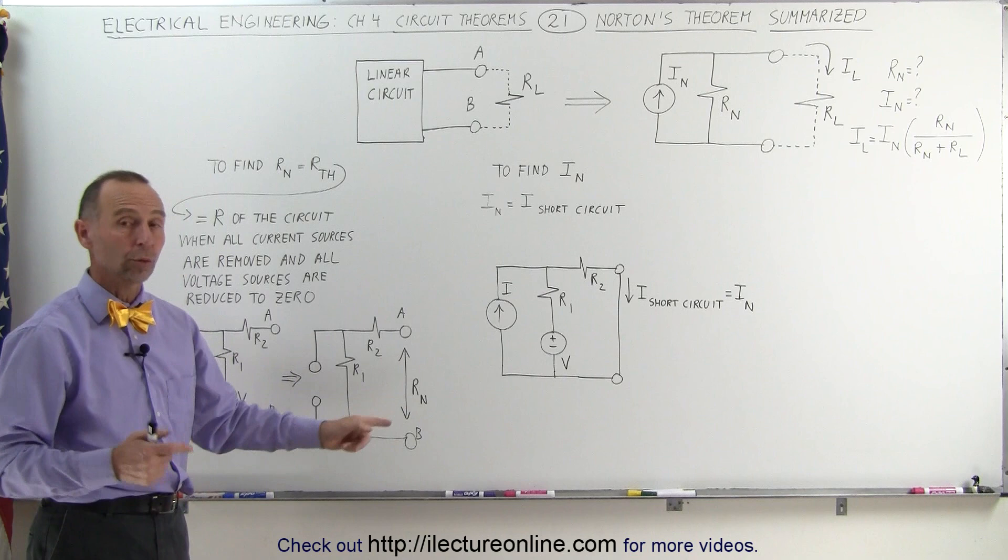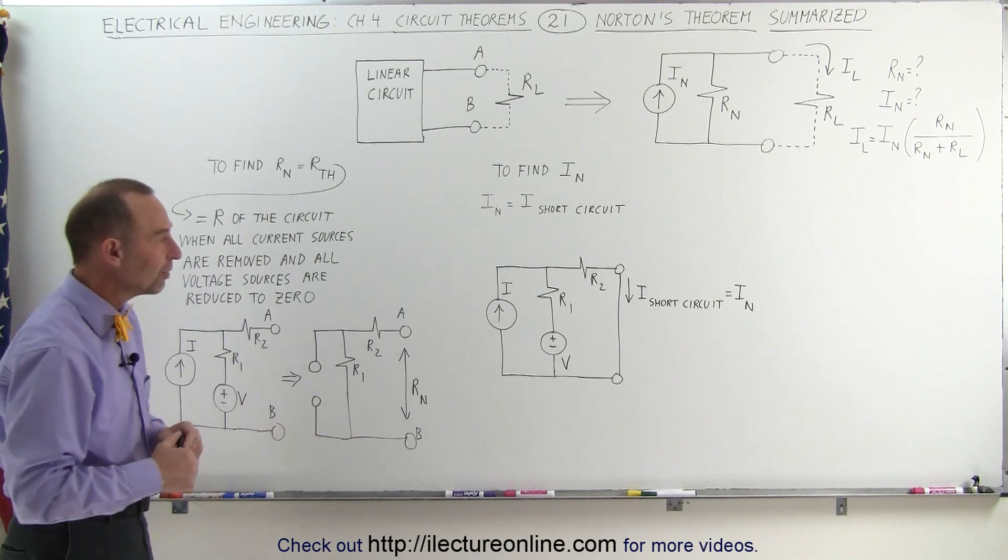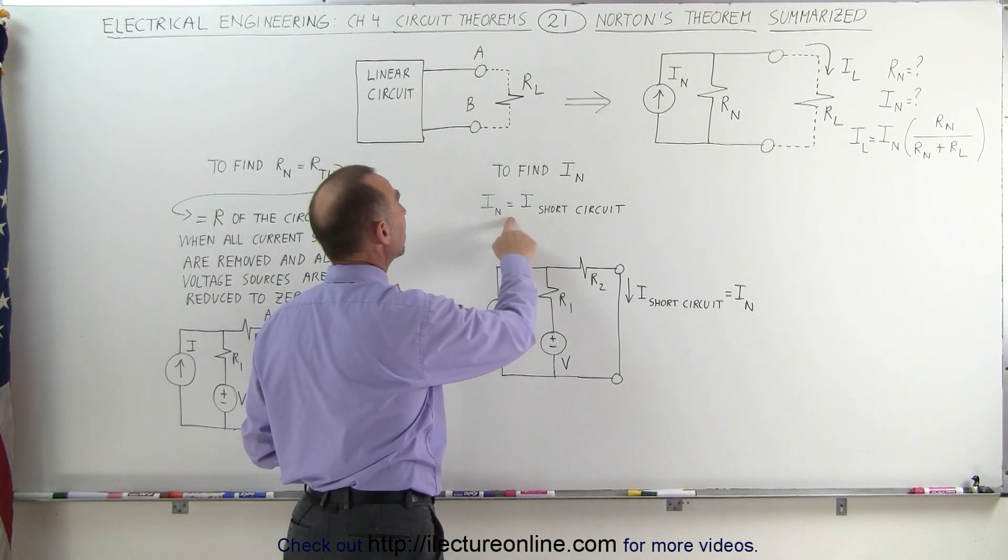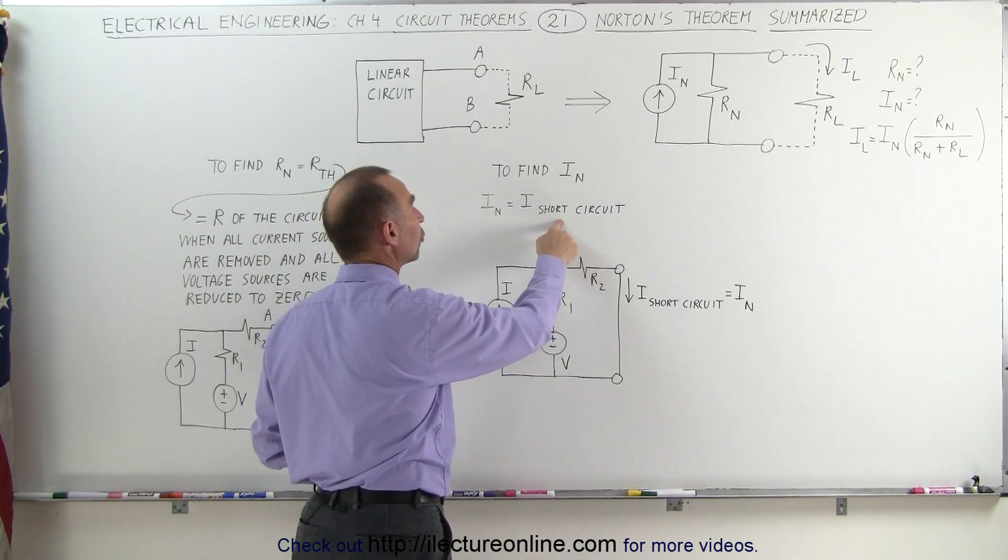That will then become the Norton resistance, which is also the Thevenin resistance. Then to find the Norton current, we realize that the Norton current equals the current of the short circuit.